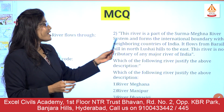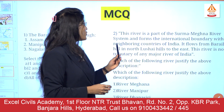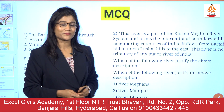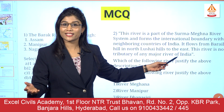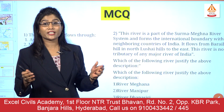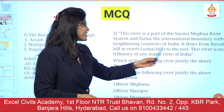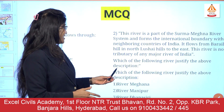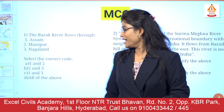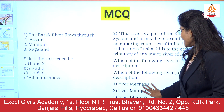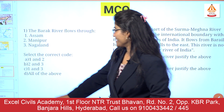The second question: this river is a part of the Surma-Meghna river system and forms an international boundary with neighboring countries of India. It flows from Barel Hill in the north and Lushai Hills to the east. This river is not a tributary of any of the major rivers of India. Which of the following rivers justifies the above description? Option A: river Meghna, Option B: river Manipur, Option C: river Dhanasiri, Option D: river Barak. I am sure you know this answer 100%.